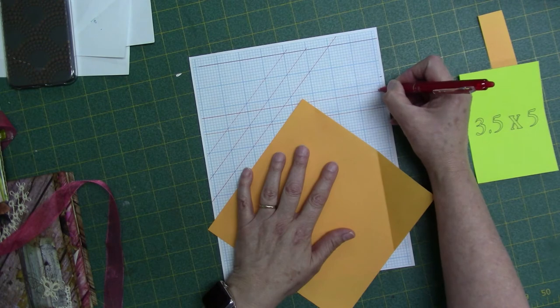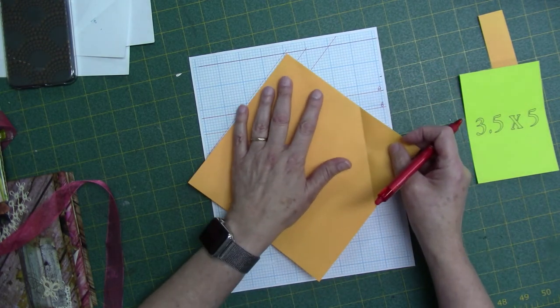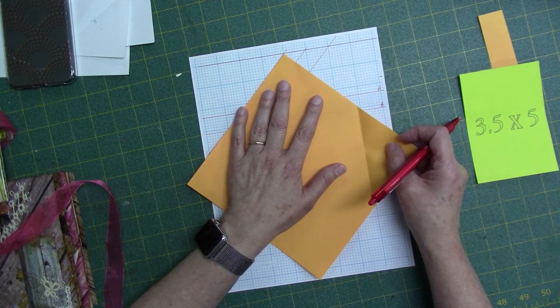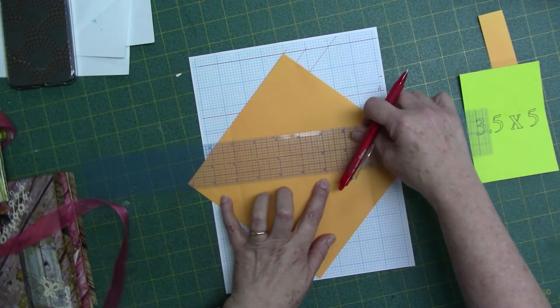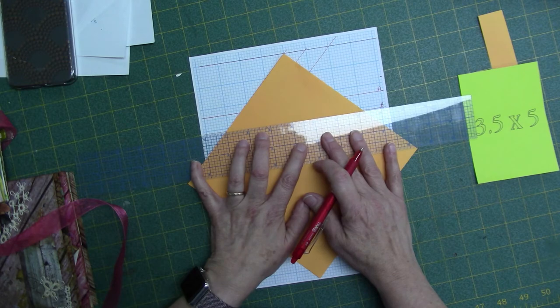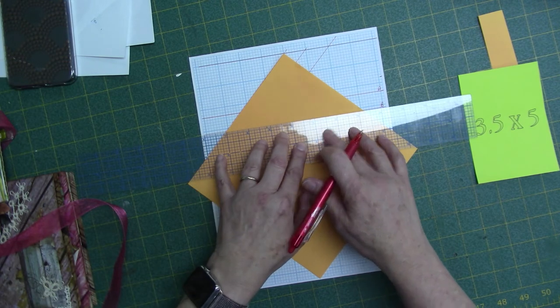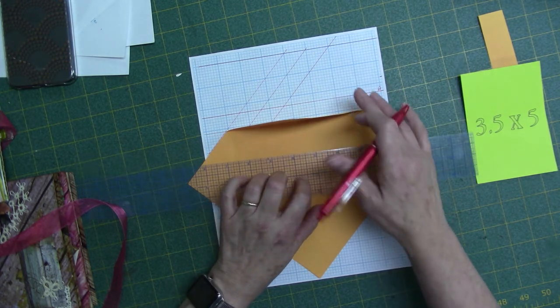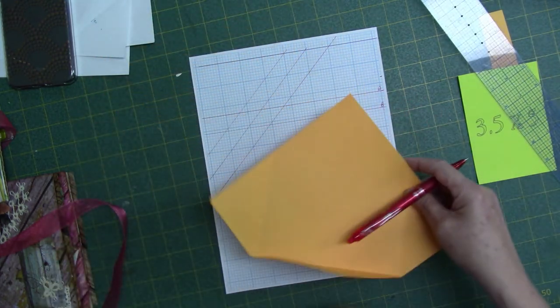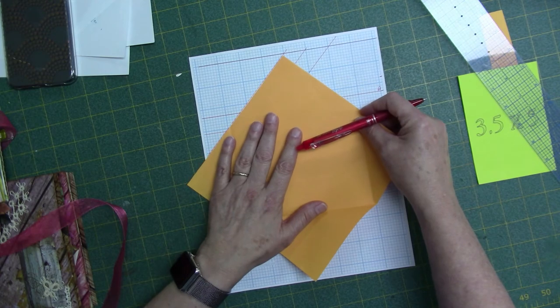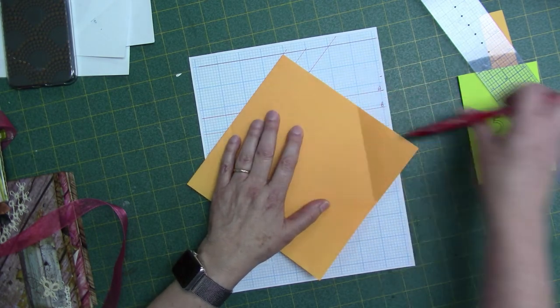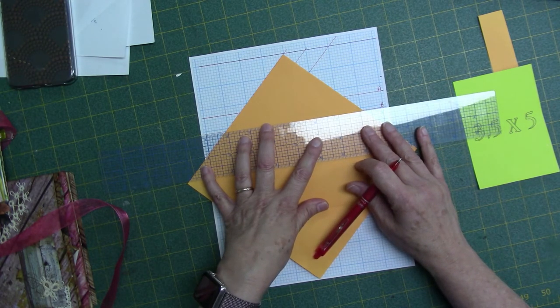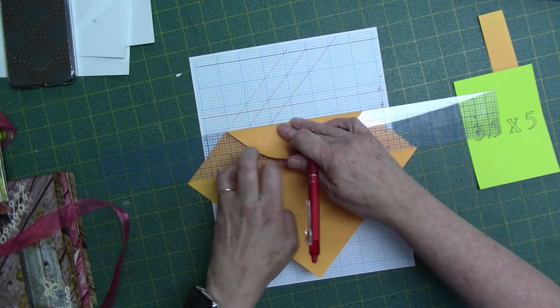Okay. So this was my A, and this is going to be my B. And then I'll lay my straight edge across that line, crease the paper, and repeat for the opposite corner.